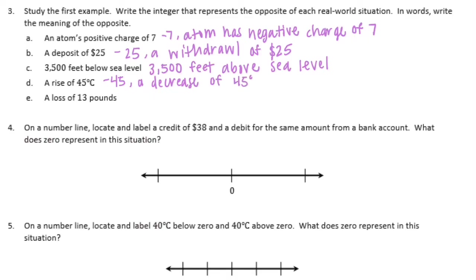A loss of 13 pounds: since losing is negative 13 pounds, the opposite would be positive 13 — let's say a gain of 13 pounds.